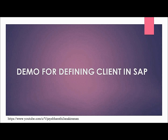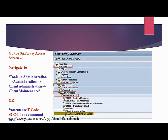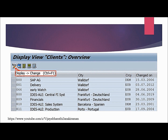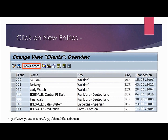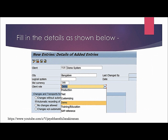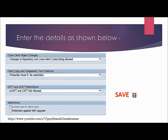Now let's look at the demo for defining a client in SAP. On the SAP Easy Access screen, navigate to Tools > Administration > Administration > Client Administration > Client Maintenance, or alternatively use transaction code SCC4 in the command field and press Enter. In the screen that appears, click the Display/Change button. Press Continue when the information window pops up. Click the New Entries button. Fill in the details including the client number, client key, client description, city, and other details as shown. Once you have entered all the details, click the Save button.